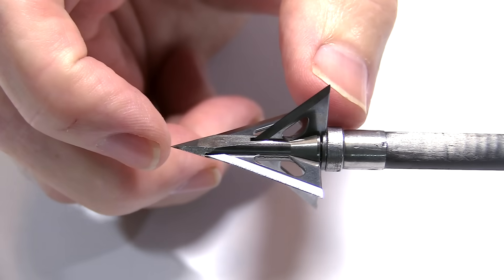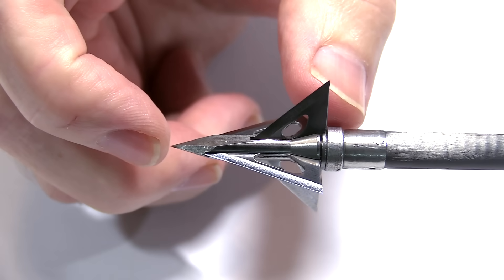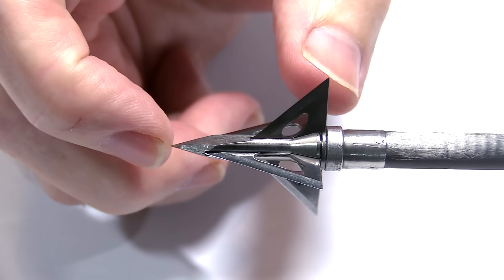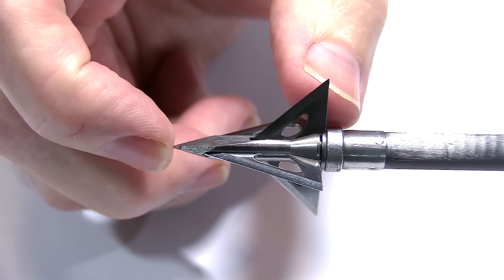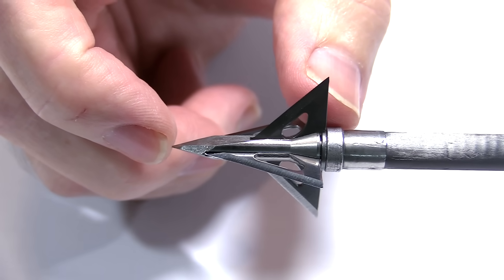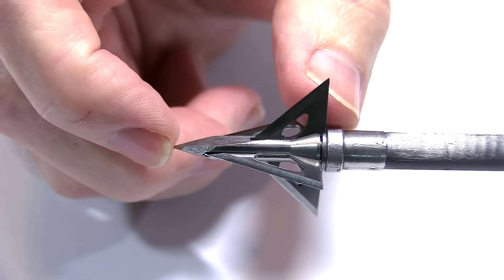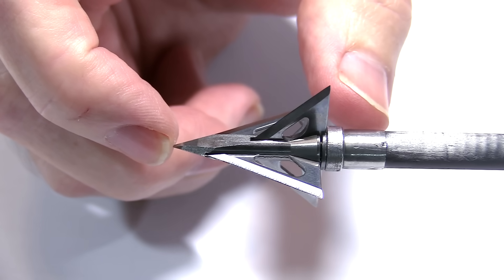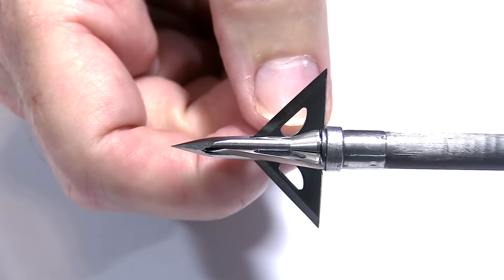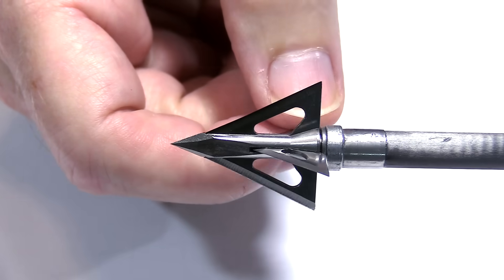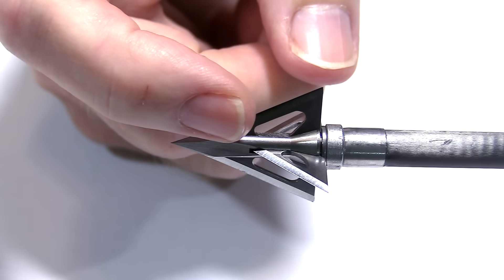The overall length is 1.2 inches. So pretty short profile as well. Slick Tricks were, they say, the first to come out with a really super short compact style. A lot of others have followed since then. And the blades are .035 inches thick. And they're all replaceable blades.